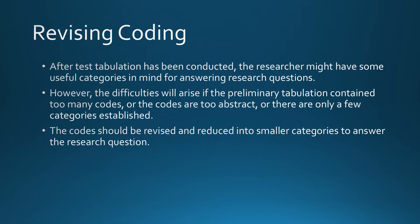Revising Coding. After test tabulation has been conducted, the researcher might have some useful categories in mind for answering research questions. However, difficulties will arise if the preliminary tabulation contained too many codes, or the codes are too abstract, or there are only a few categories established. The codes should be revised and reduced into smaller categories to answer the research question.